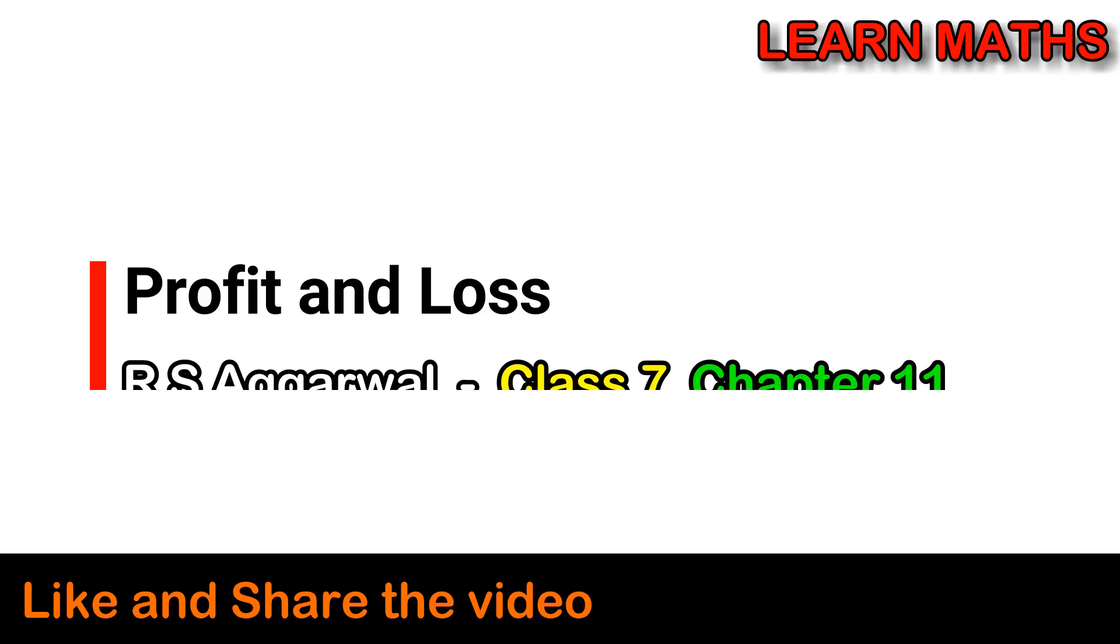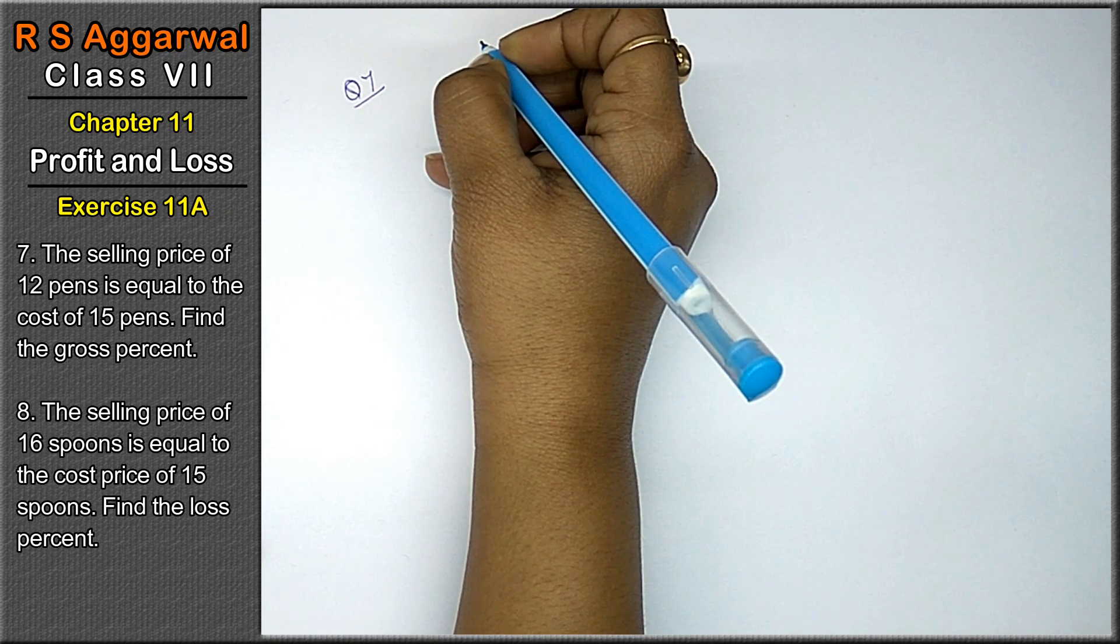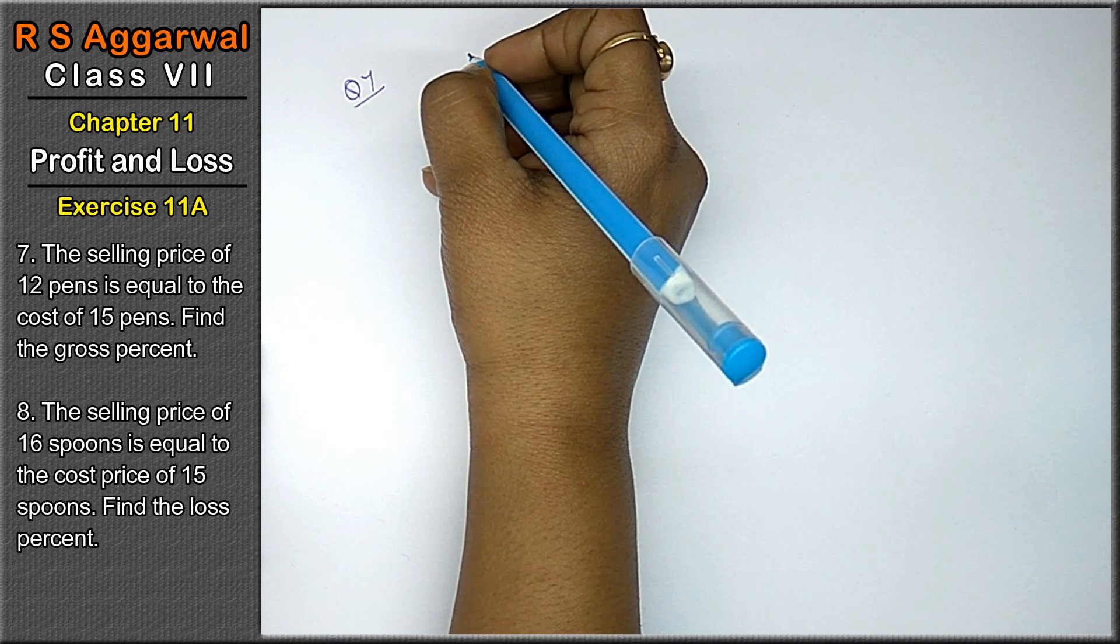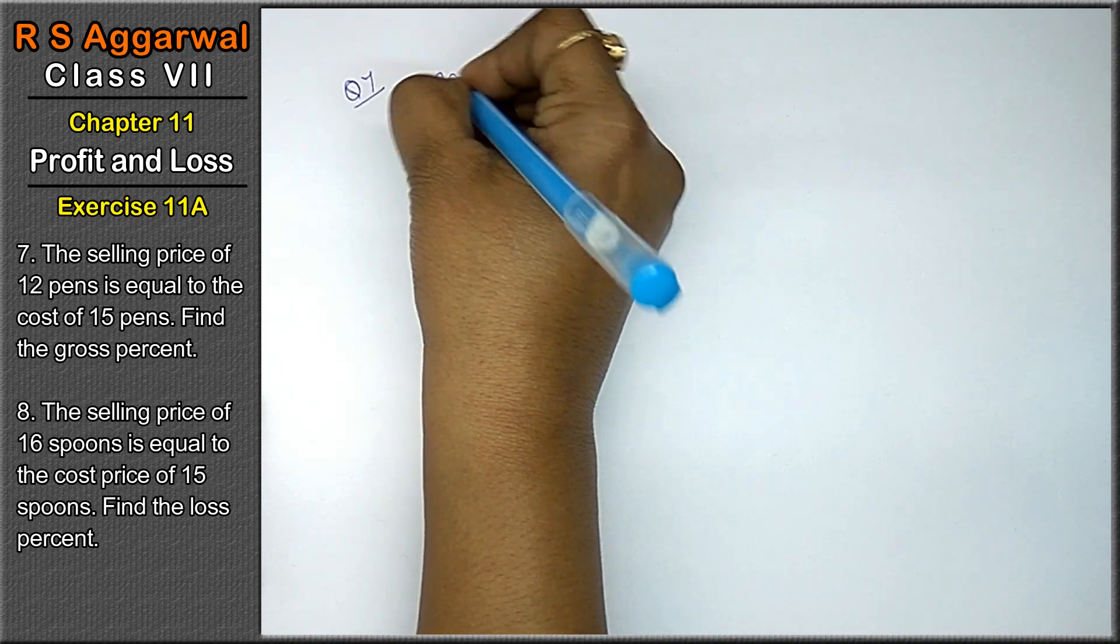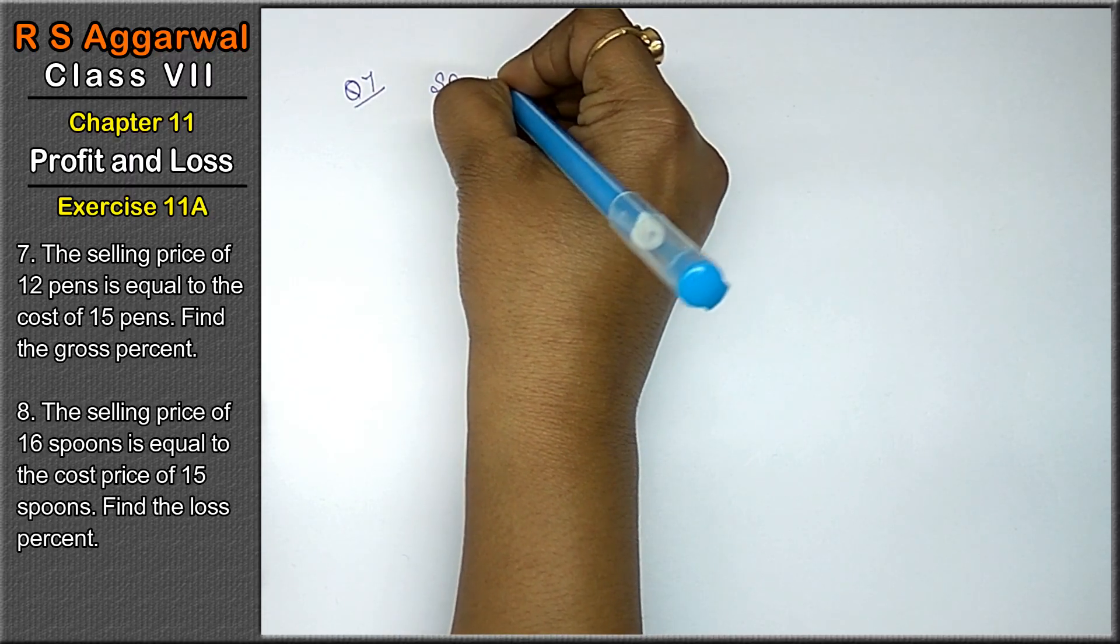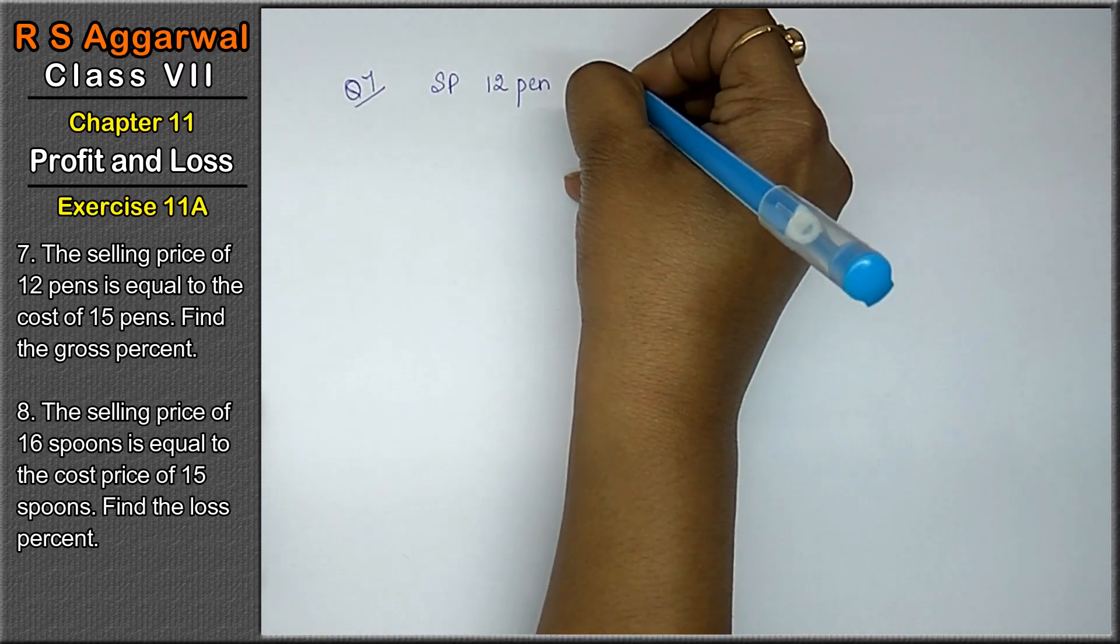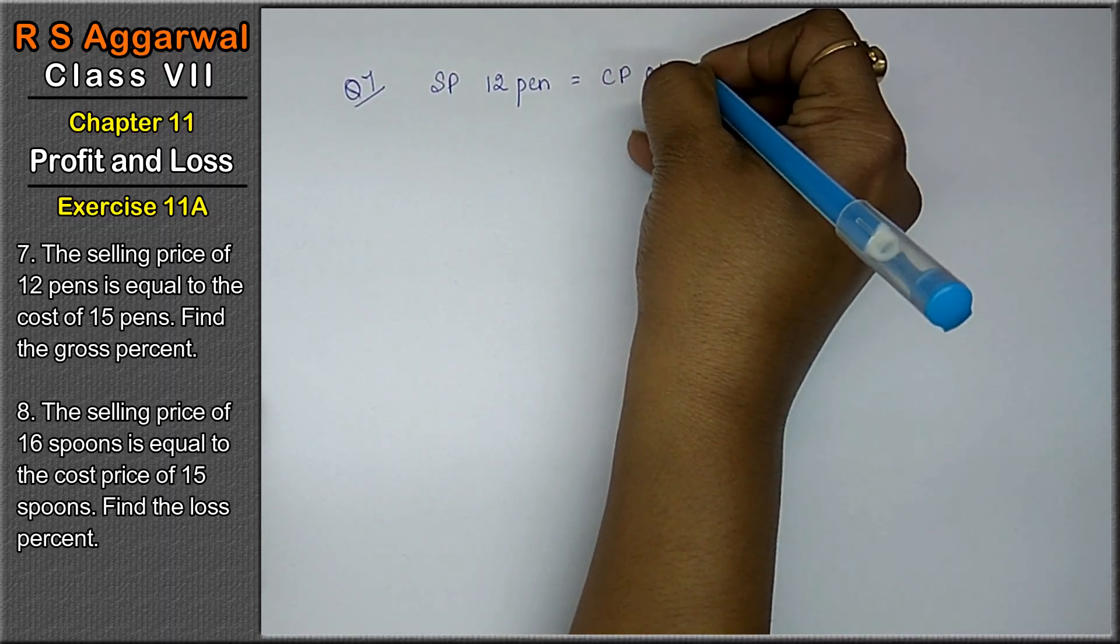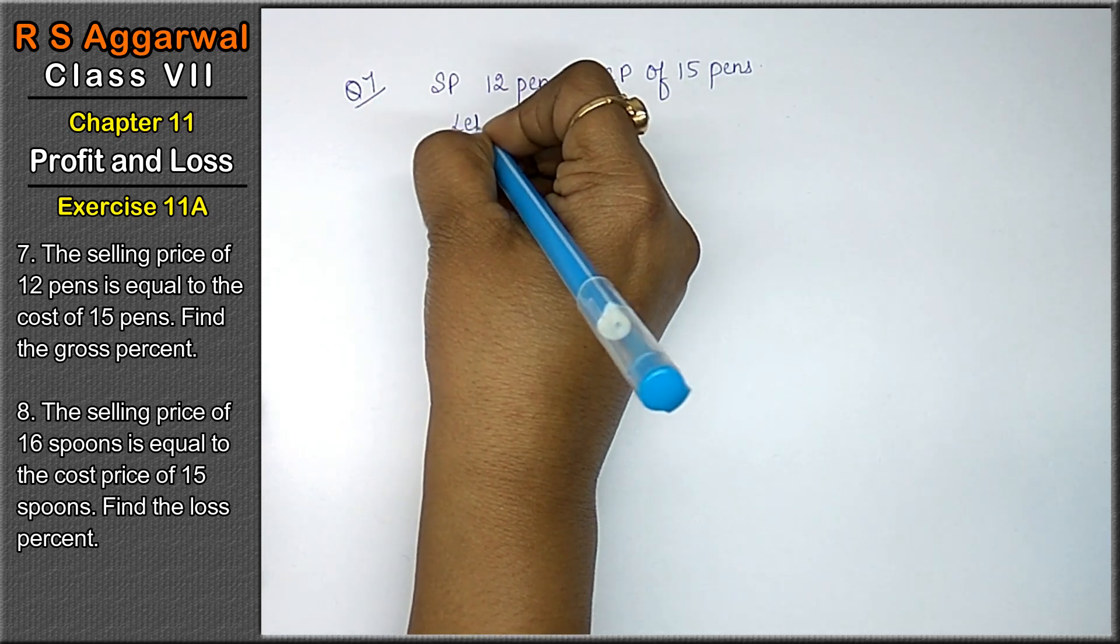Let's do question number seventh of Chapter 11, that is Profit and Loss, Exercise 11A. Question number seventh is: the selling price of 12 pens is equal to the cost price of 15 pens.